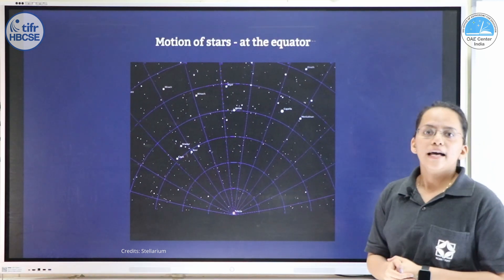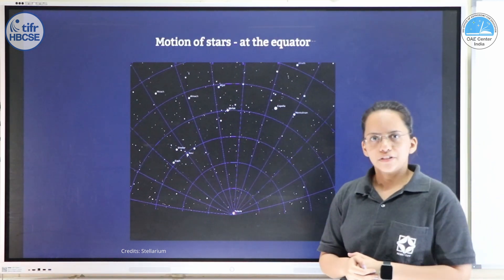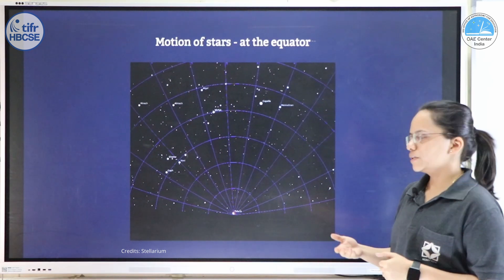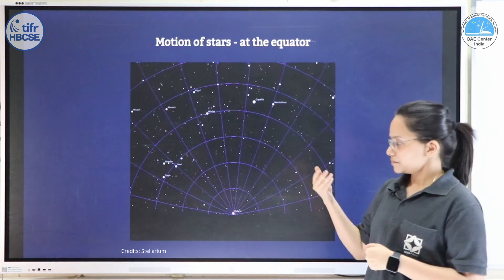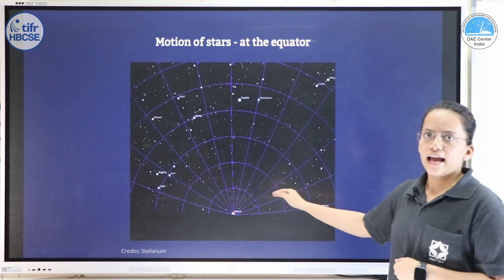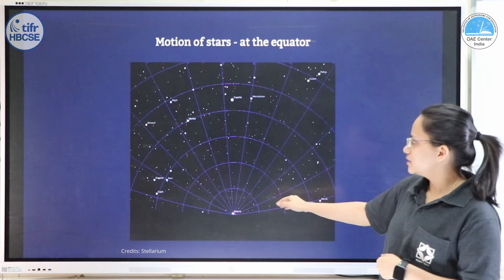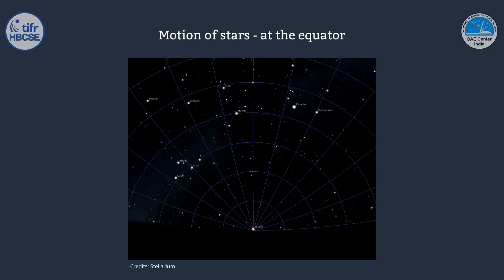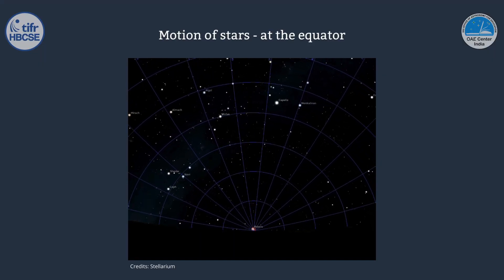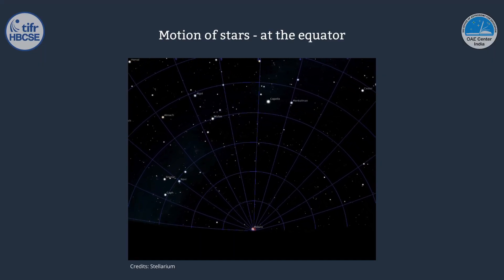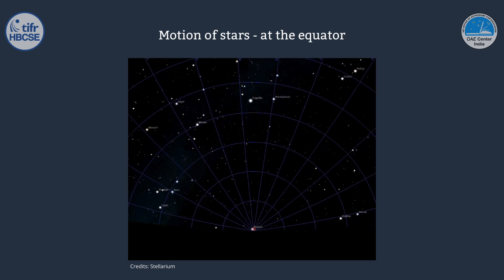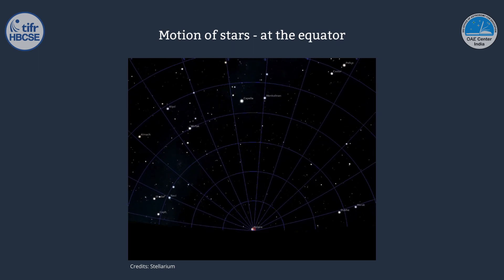At the equator, the pole star is right at the horizon. So all stars will rise and set, forming concentric arcs around the pole star.